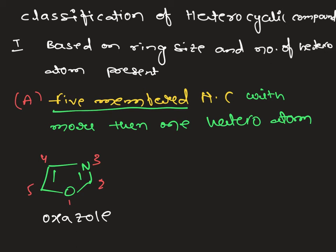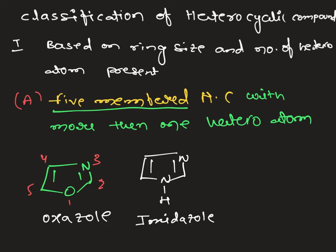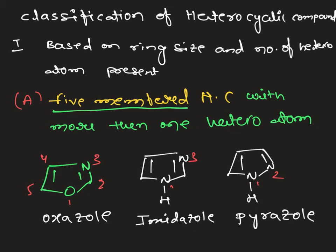Similarly, I will take one more example with 2 nitrogen atoms — a 5-membered ring with 2 heteroatoms. This compound name is imidazole. Let's take another example where I have changed the position of nitrogen: here 1,3 position versus 1,2 position. This is also a 5-membered heterocyclic compound. In the 5-membered heterocyclic compounds, we further classify based on the number of heteroatoms present.